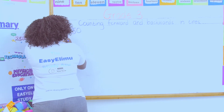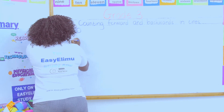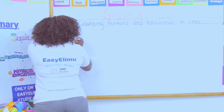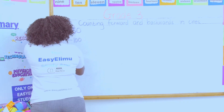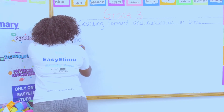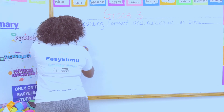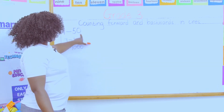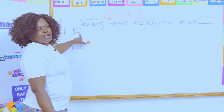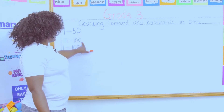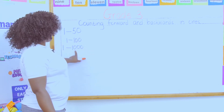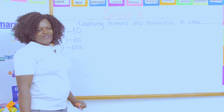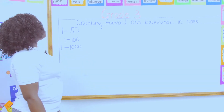In Grade Two we still did one up to 100. Now in Grade Three we are doing one up to 1000. Do you know the zeros are increasing? For 10 it was one zero, then for 100 there are two zeros, and for 1000 there are now three zeros. That is how the numbers increase.